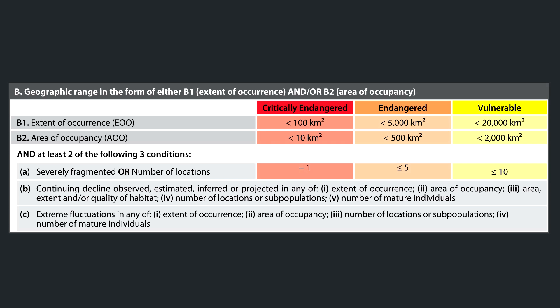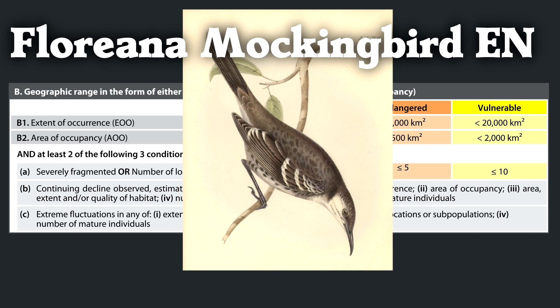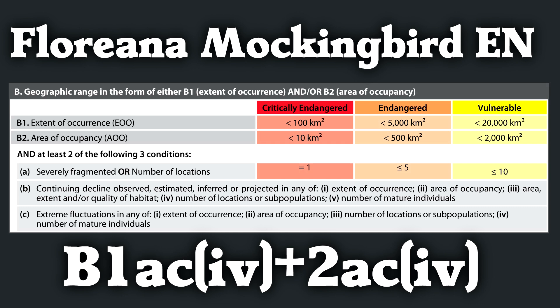Or condition C: extreme fluctuations in any of extent of occurrence, area of occupancy, number of locations or subpopulations, or number of mature individuals. If there are extreme fluctuations up or down, that species is more at risk of extinction because if the population dips too low, an extinction vortex can kick in where a very small population gets smaller and smaller until it goes extinct. An example listed under Criteria B is the Floriana mockingbird — listed under B1 with A and C being true, specifically C4 (number of mature individuals was fluctuating), and B2 also applied with A and C4.